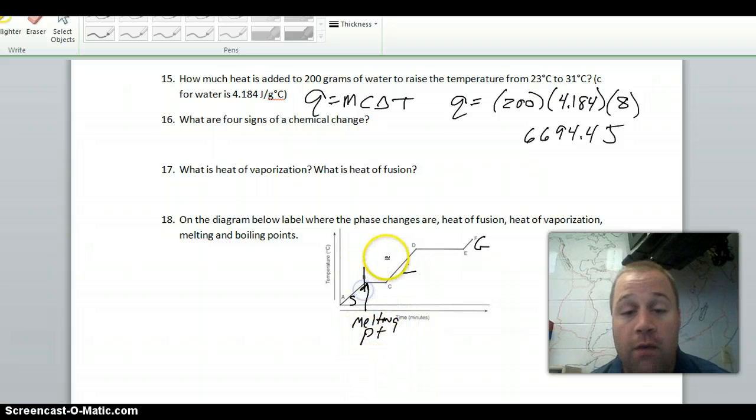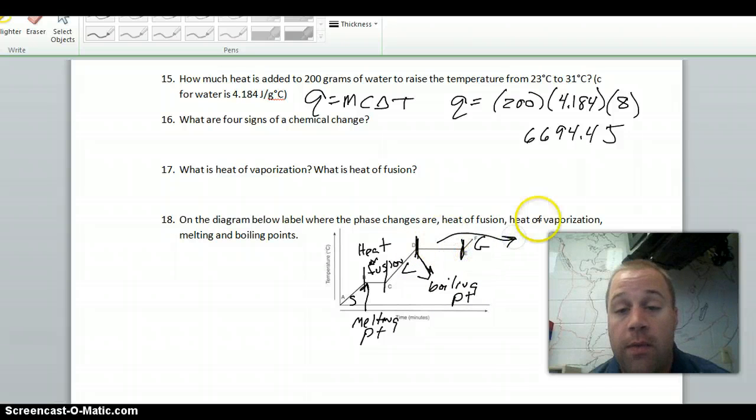This distance right here from B to C is the heat of fusion. And this right here is the phase change, this flat line. We now want the boiling point. The boiling point is when a liquid starts to become a gas. So that is right here, D, we'll call that the boiling point. That makes this amount of energy here from D to E, that is my heat of vaporization. And then that distance, that line between D and E is the phase change. If you have any other questions, make sure you ask before we take the test.